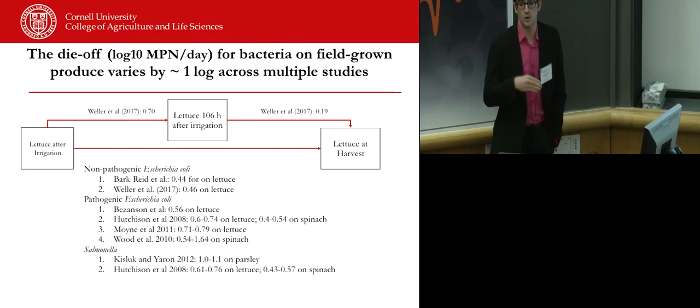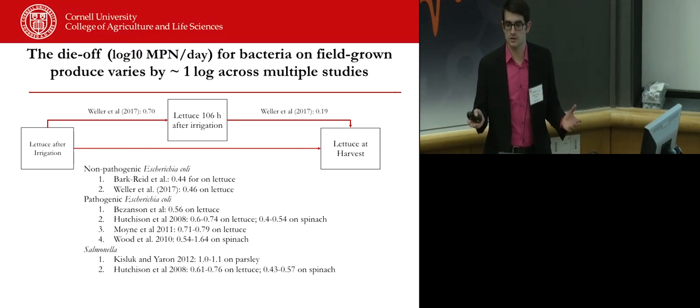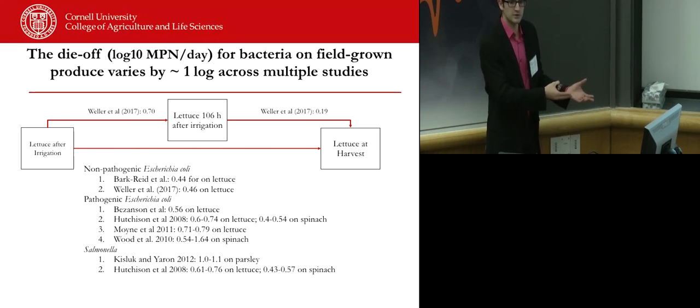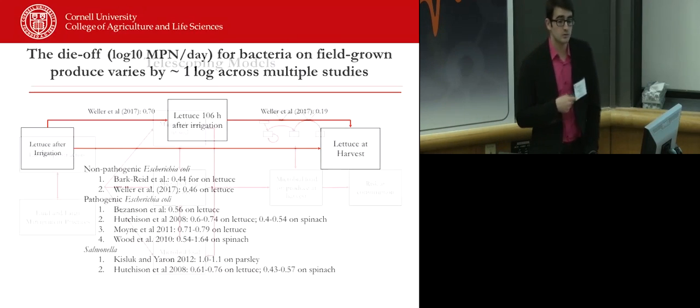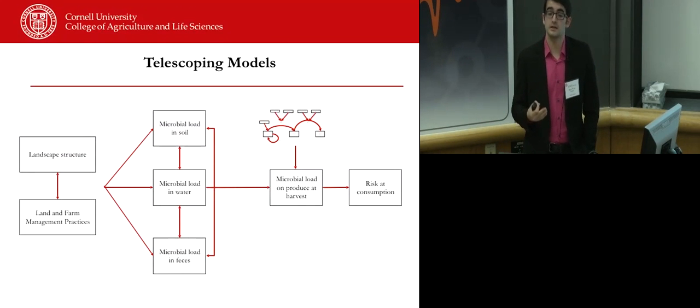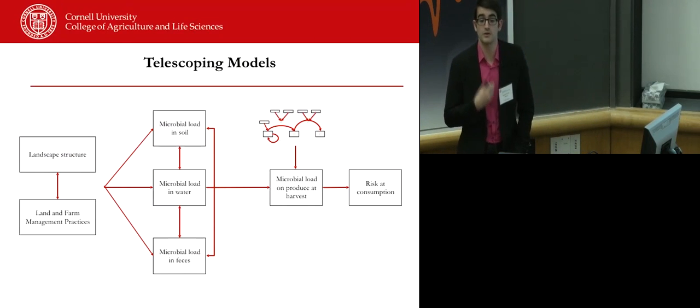Now, the reason the fact that all these numbers are within one log of each other is so big, is because the federal government just passed the first attempt to regulate fresh produce safety in the nation's history. Part of this, they established agricultural water standards. And if a farmer, as I said, farm environment is not clean, your water doesn't always meet the standard. They created a kind of loophole. If your water doesn't meet the standard, you can still use the water. However, once the pathogen is on the crop, it has to decline to acceptable levels. And the problem with that is, we don't really have good science to base that rate to determine how fast that pathogen dies off. The fact that all this is within one log suggests that we're getting close.